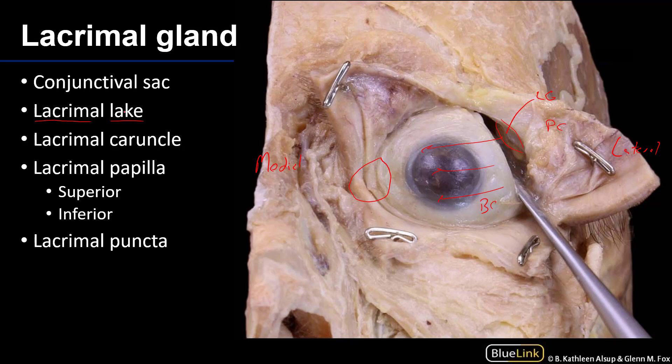Deep to that accumulation of tears, we can see an elevation of tissue. This elevation contains both sebaceous and sudoriferous glands, and it's known as the lacrimal caruncle. In the mornings, when you wake up and wipe the medial canthi of your eyes, that accumulation of substance — sometimes called sleep, or eye boogers — those are secretions from the glands of the lacrimal caruncle.